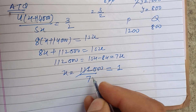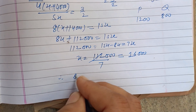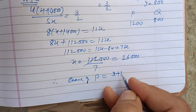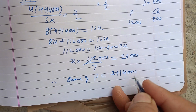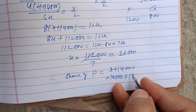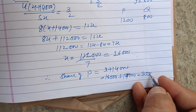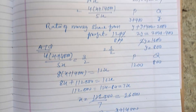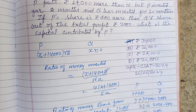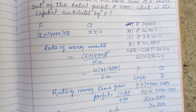Therefore x = 16,000. The capital contribution by P is x + 14,000 = 16,000 + 14,000 = 30,000 rupees. So 30,000 is the correct answer to this question, which matches the correct option. I hope you got it — please like the video, subscribe to the channel, thanks for watching.